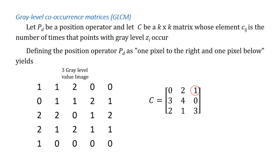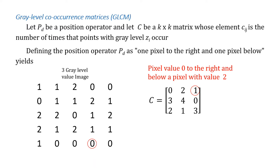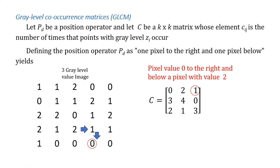The GLCM matrix that we see on the right was obtained as follows. The position on the first row and last column indicates that we are looking for pixel values 0 to the right and below of a pixel value with value 2, and as we highlight with a red circle on the image, that would be the only case for this example.